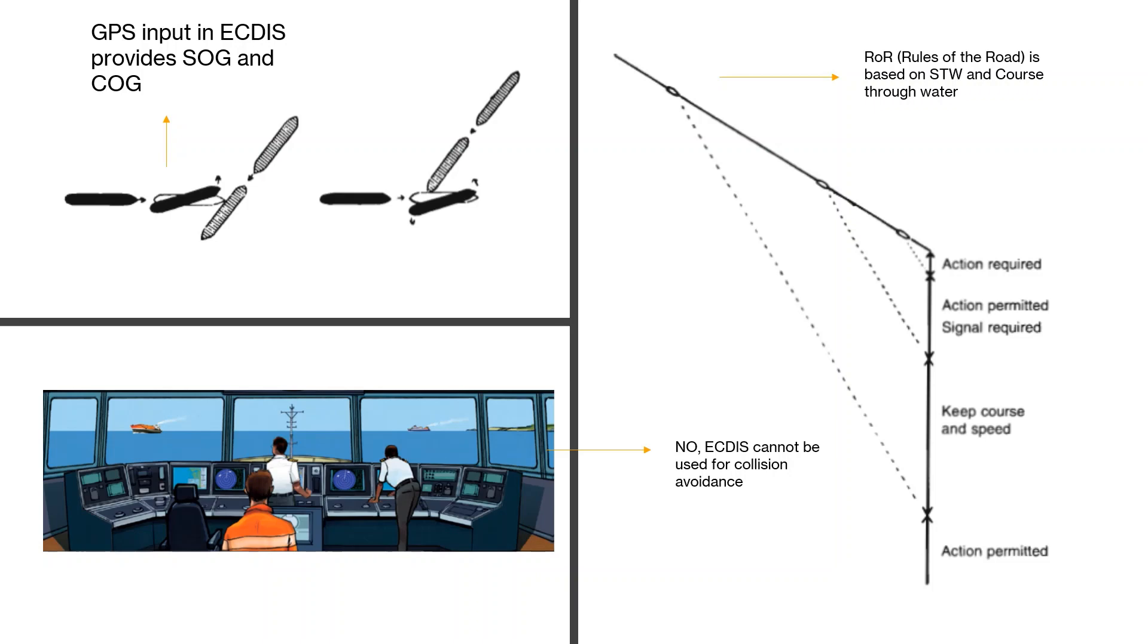You can use it to monitor the traffic situation, but not to make it a basis for determining whether your action will be enough to avoid the collision with other vessels. Now I will show you what I mean by the GPS input into the ECDIS.